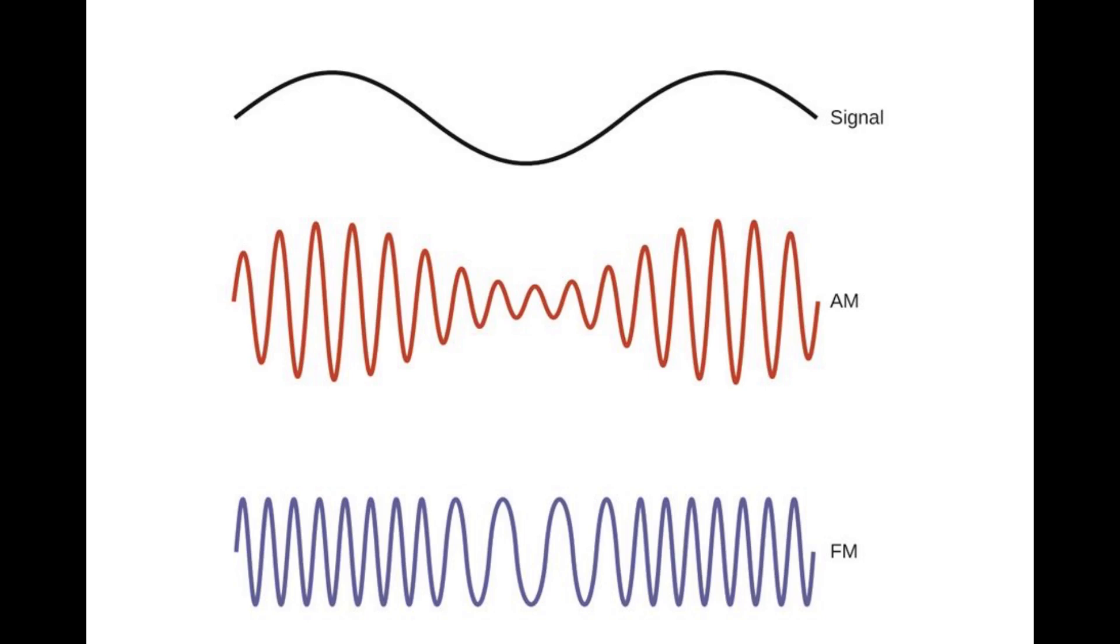Radio waves are generated by charged particles undergoing acceleration, such as time-varying electric currents. Naturally occurring radio waves are emitted by lightning and astronomical objects, and are part of the black-body radiation emitted by all warm objects.